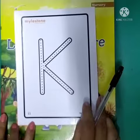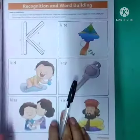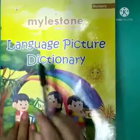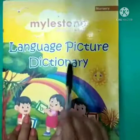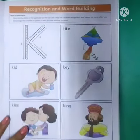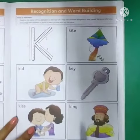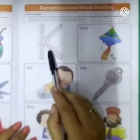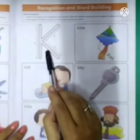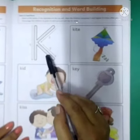We will read some vocabulary pictures of letter K from your book Language Picture Dictionary. This is on page number 25. Let's start. This is letter K and the sound of K is K. Start reading now.